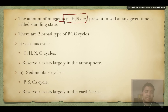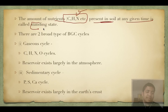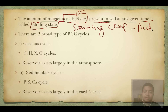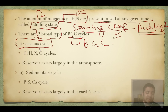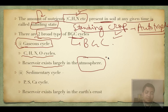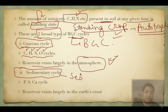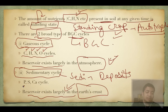The amount of nutrients like C, H, N present in soil at any given time is called the standing state. Standing crop refers to the amount of autotrophs - plants, algae, and fungi - present at a given time. There are two broad types of biogeochemical cycles. First, the gaseous cycle, where the reservoir exists largely in the atmosphere - examples include carbon, hydrogen, nitrogen, and oxygen. Second, the sedimentary cycle, where deposits occur in the earth's crust - examples include phosphorus, sulfur, and calcium.